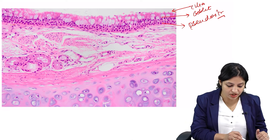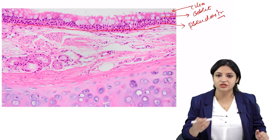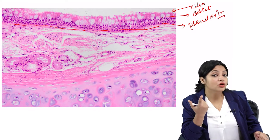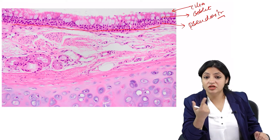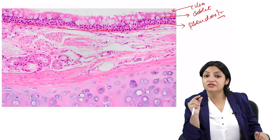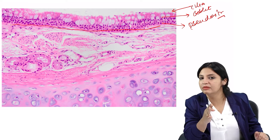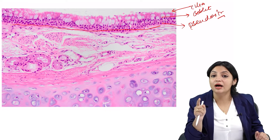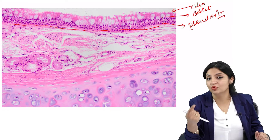Now look at the basement membrane — this is the normal thickness, it is not very thickened. Later, when you see a slide of asthma with airway remodeling, you will see the basement membrane is very, very thick, so you can immediately identify that the basement membrane is thickened. This can happen only when you keep seeing more and more slides.